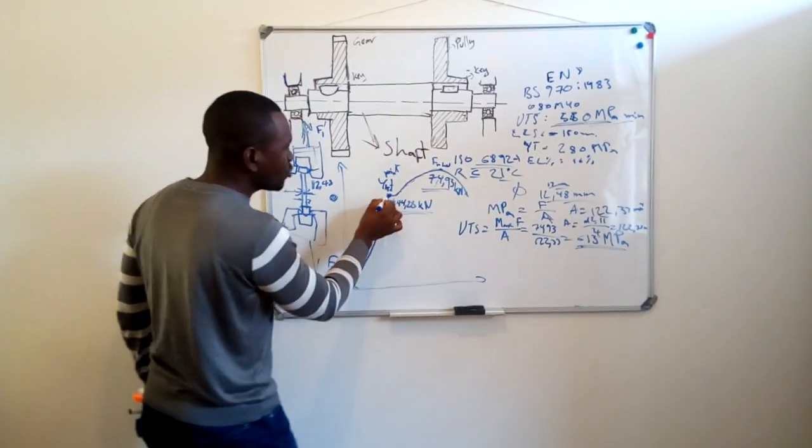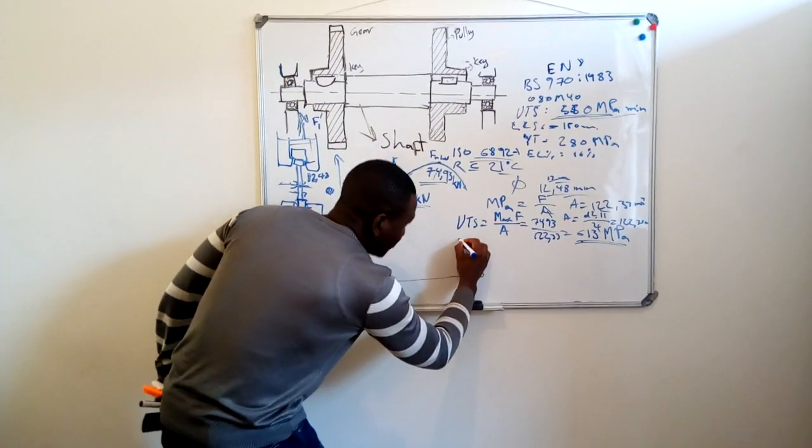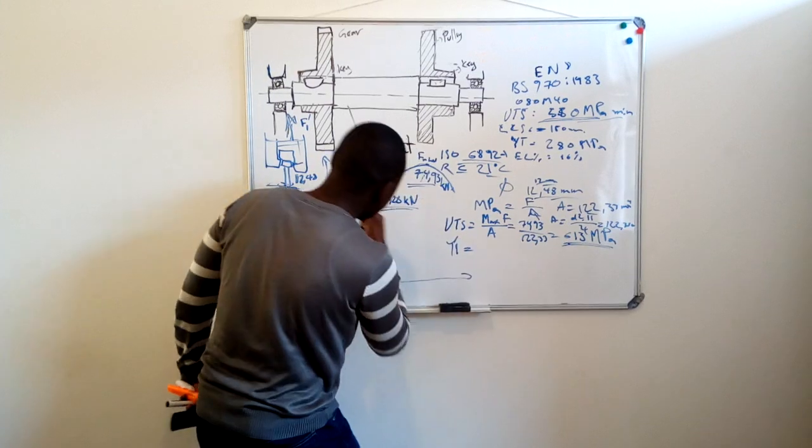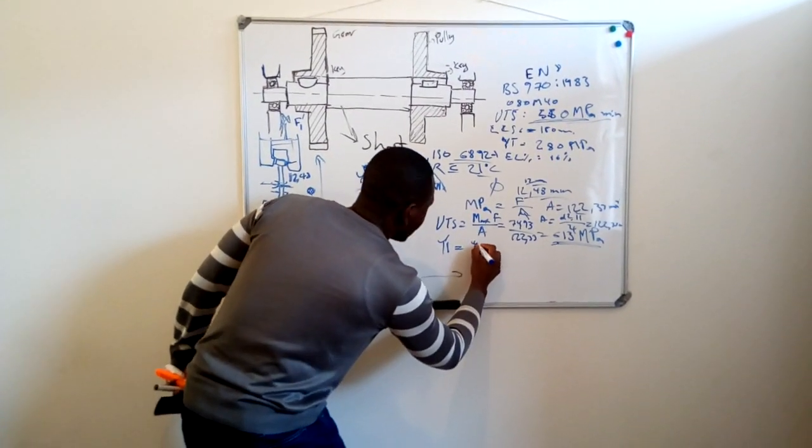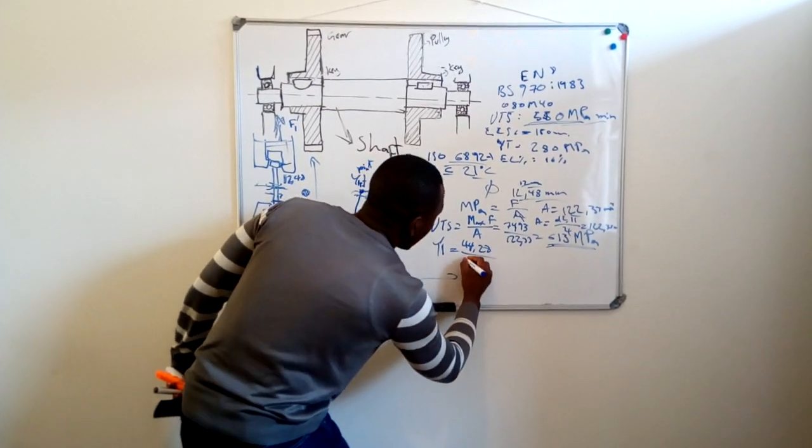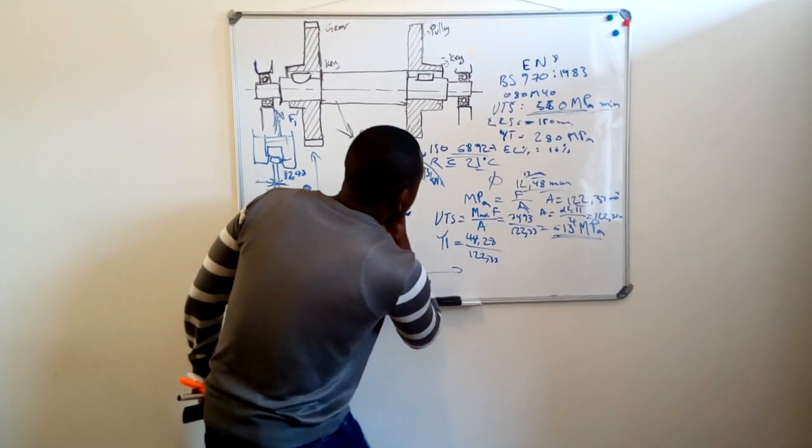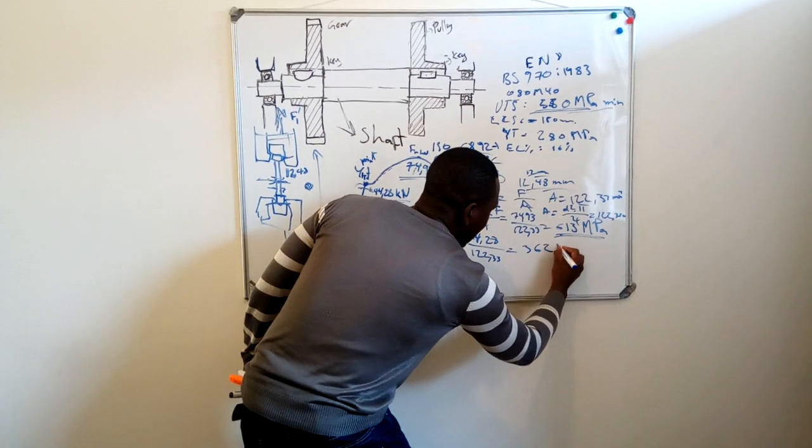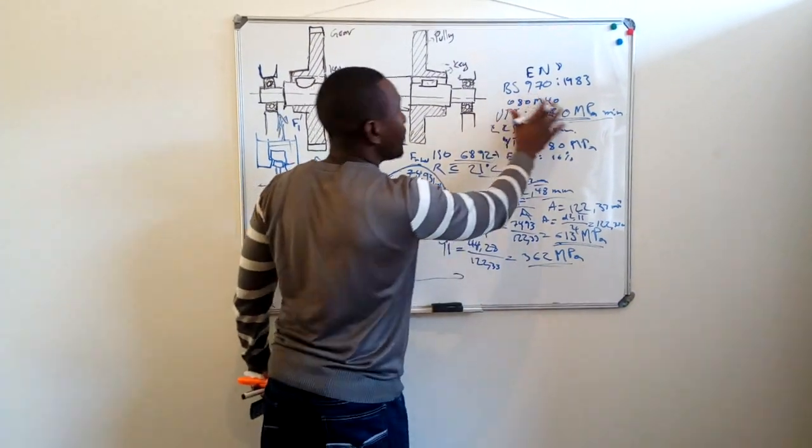That's not it. I need to make sure about the yield point. For the yield point, the yield point in MPa, now I take the yield strength there, which is 44.28 over 122.33. If I have to calculate that one, I'm getting 362 MPa. So this means that my material is fine.